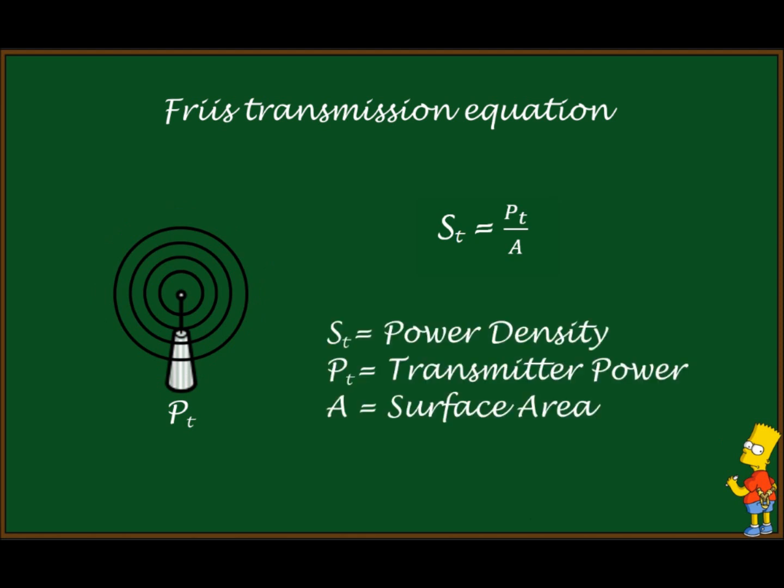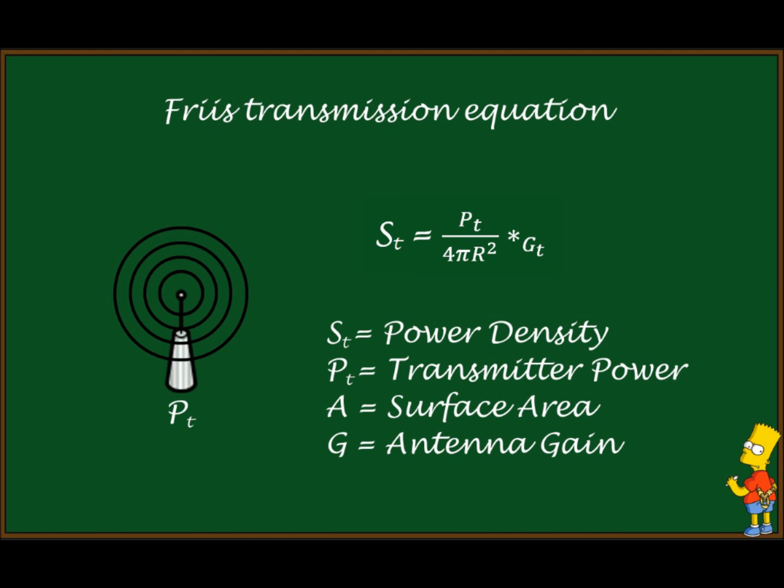Since we're talking about a sphere, we can write it in this way. But since we don't have an ideal isotropic radiator, we need to calculate the gain of our transmitting antenna GT. The receiving antenna extracts power PR.